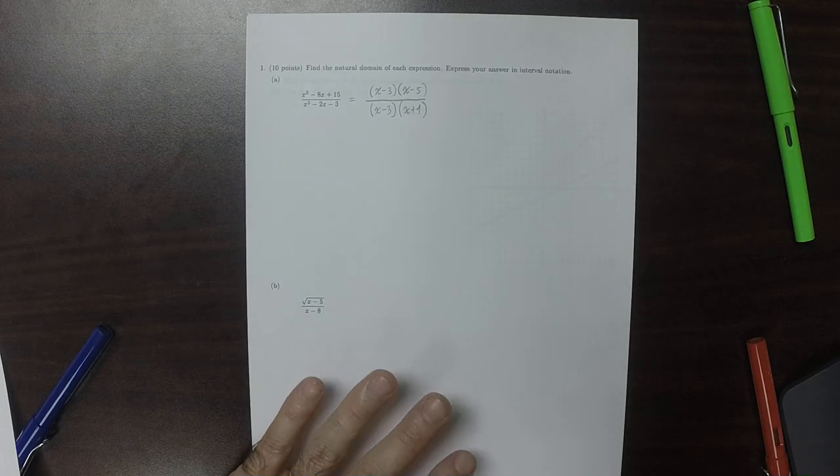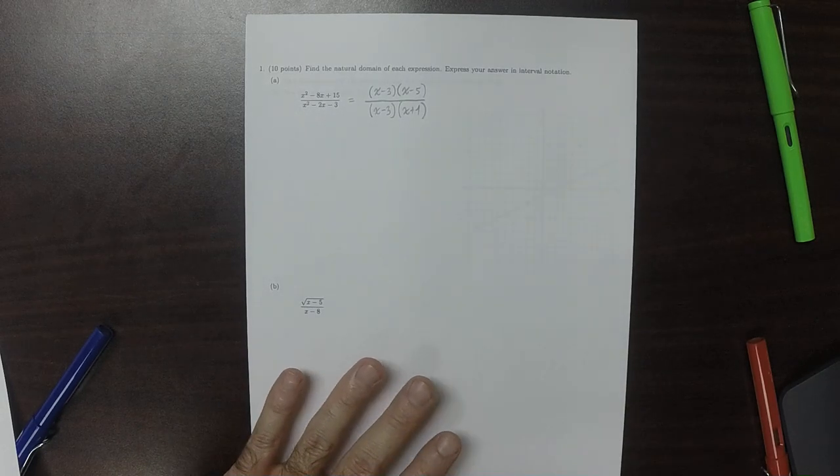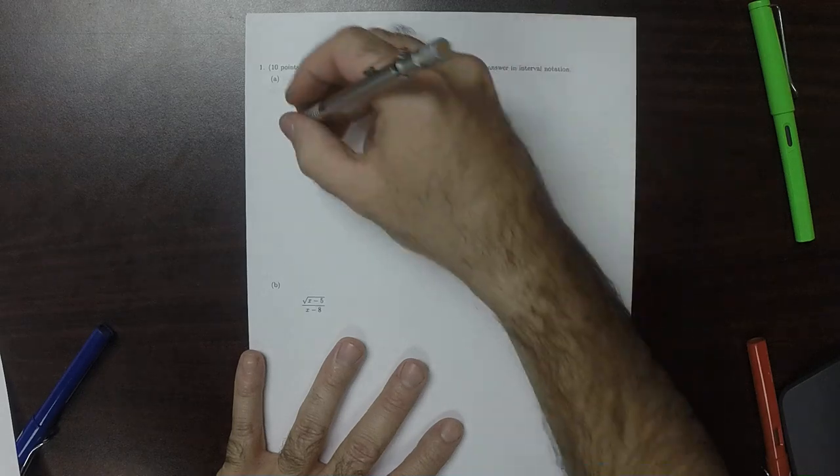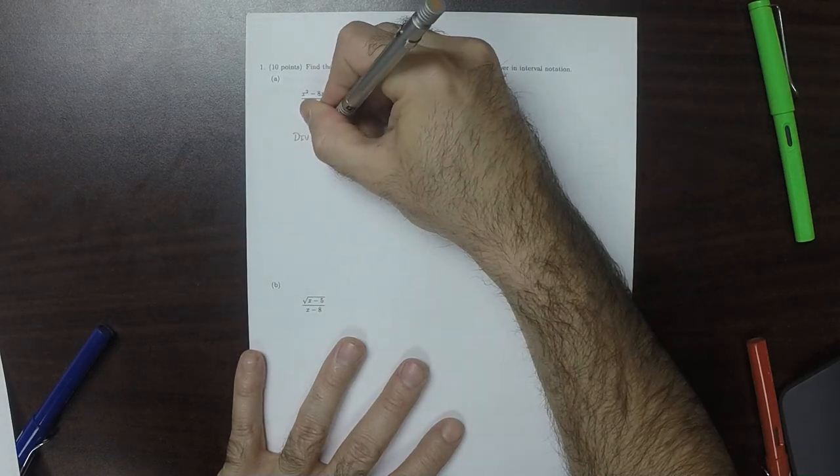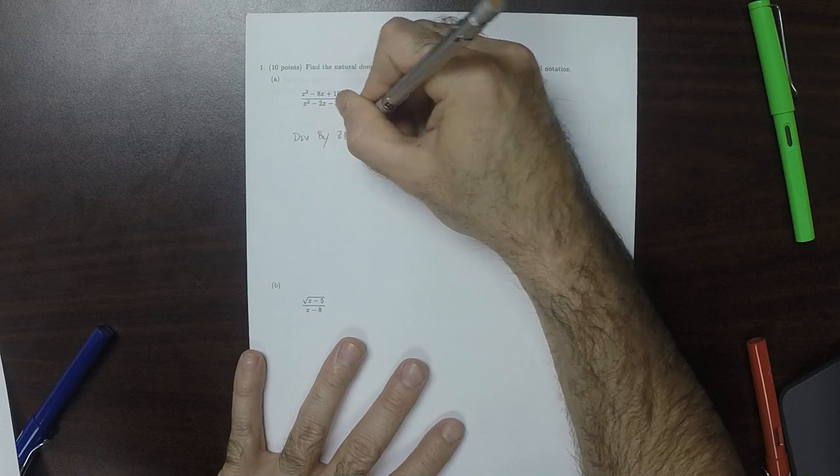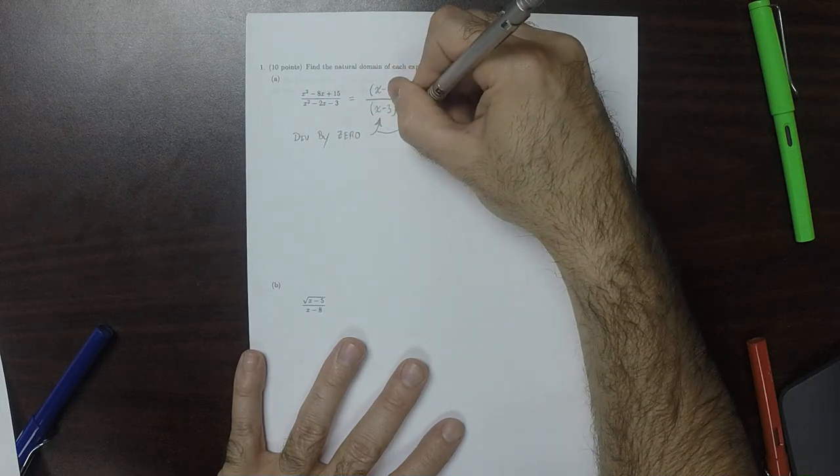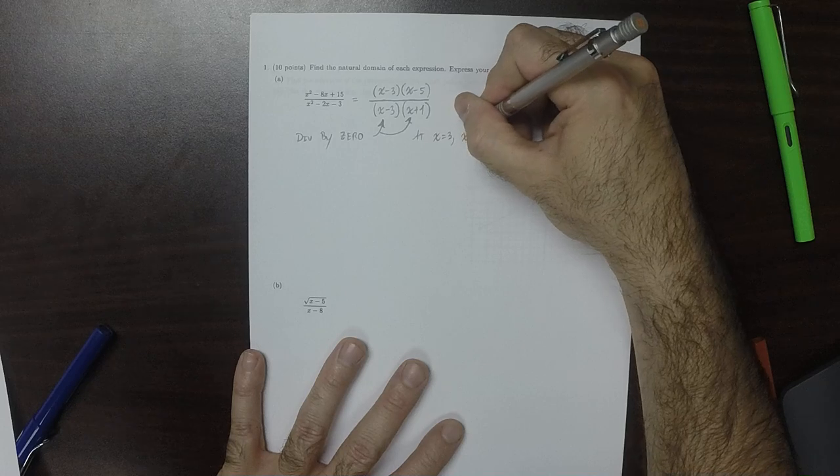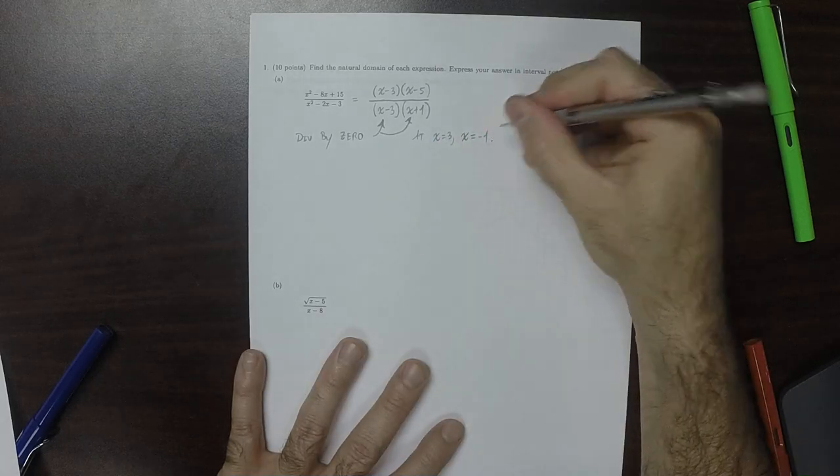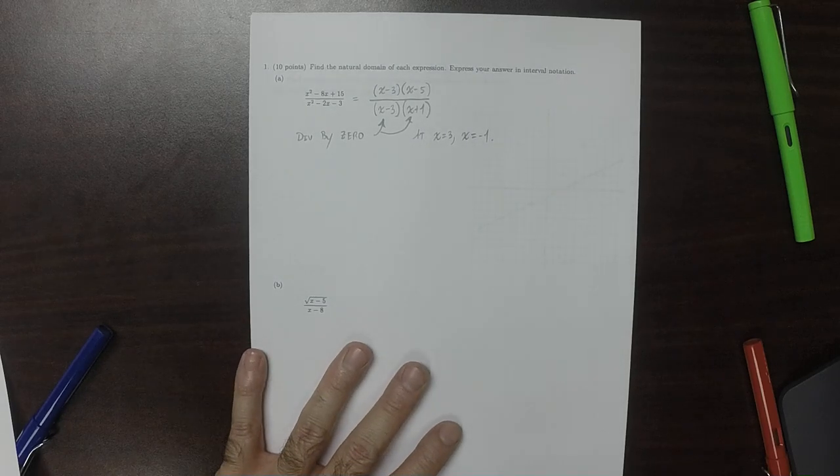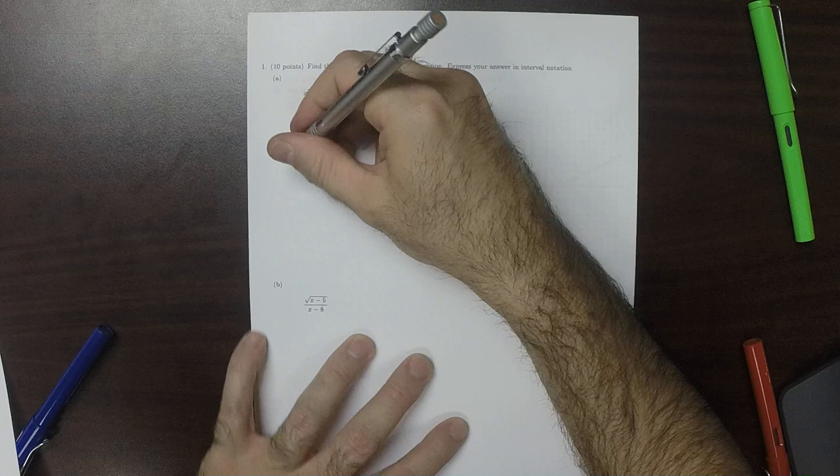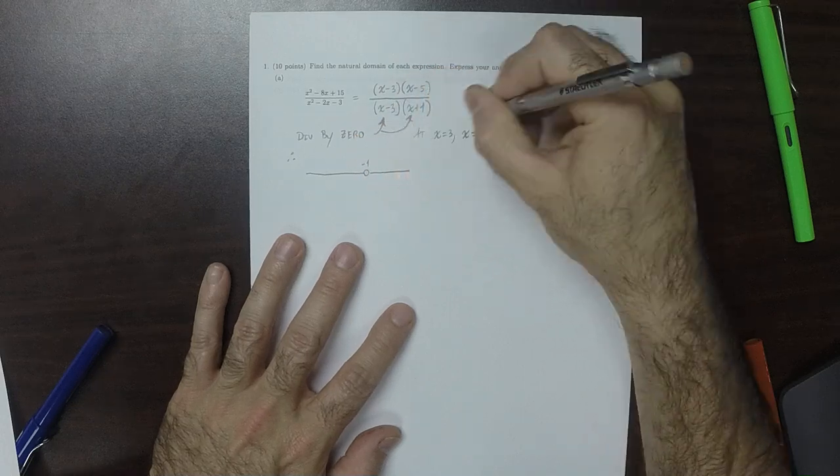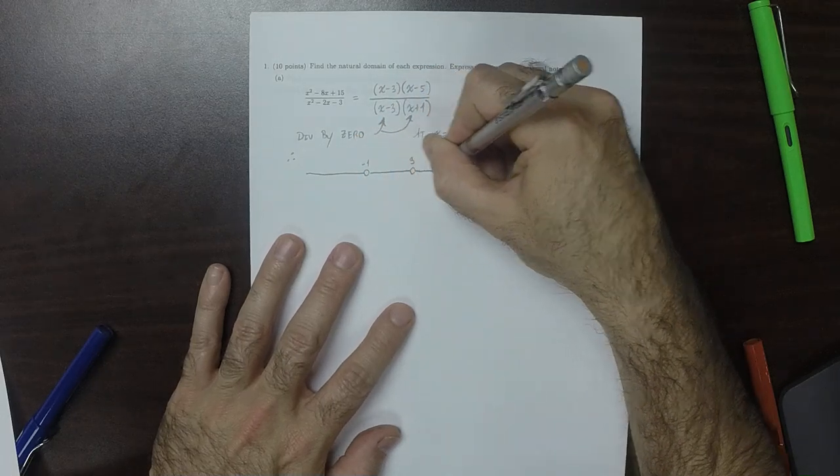So in this exercise, the answer to the question is that this expression could cause a division by 0 because of either one of these factors. The first one would be at x is 3, and the second one would be at x is negative 1. Other than that, you can evaluate this expression anywhere. Therefore, the answer is the number line where you delete those two points. You delete negative 1 and you delete 3.